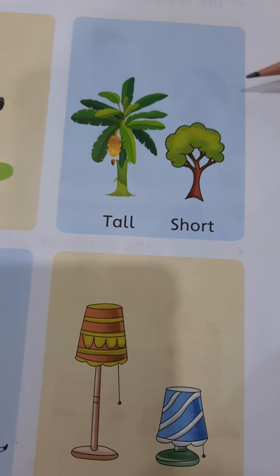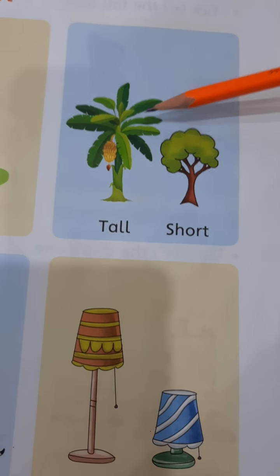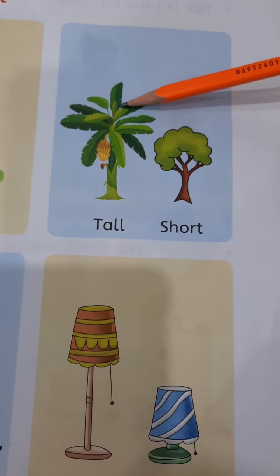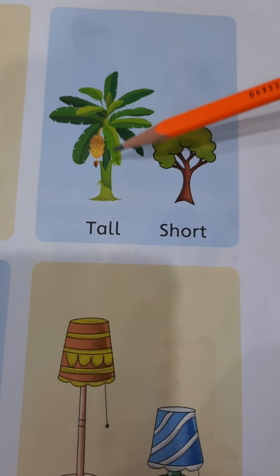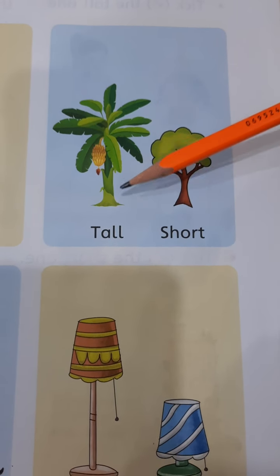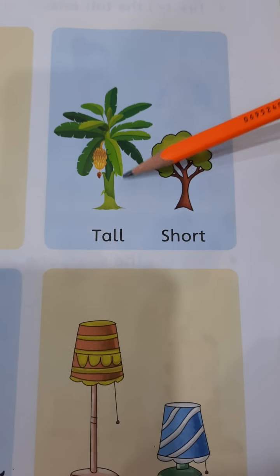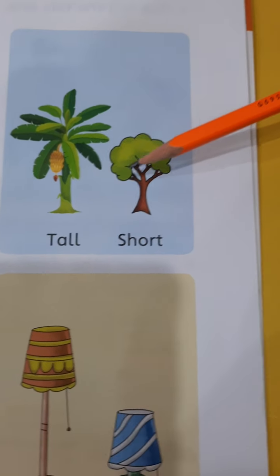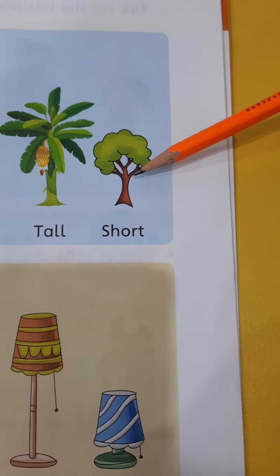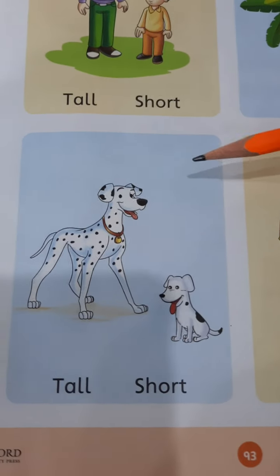Now move to the next example. Students, look at this. These are trees. ये क्या है? Tree है, लेकिन जो tree length में ज्यादा है, जो आपको heighted feel हो रहा है, वो tall है. Tall means लंबा. और as compared to this tree, ये क्या है? Short. Short means छोटा.